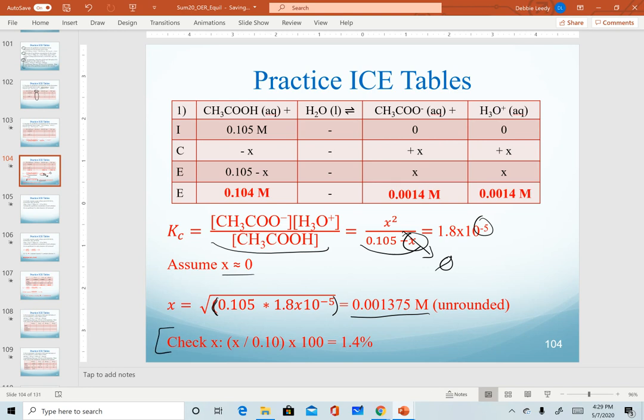Since we made the assumption, we want to check our assumption that X is valid. That is less than five percent, so this is good, and that gives us our X value. Remember our last step, of course, would be subtraction for our reactant, so we're going by decimal places. For our products, we're going by sig figs where X would be rounded to two sig figs, which is how we get these final answers.